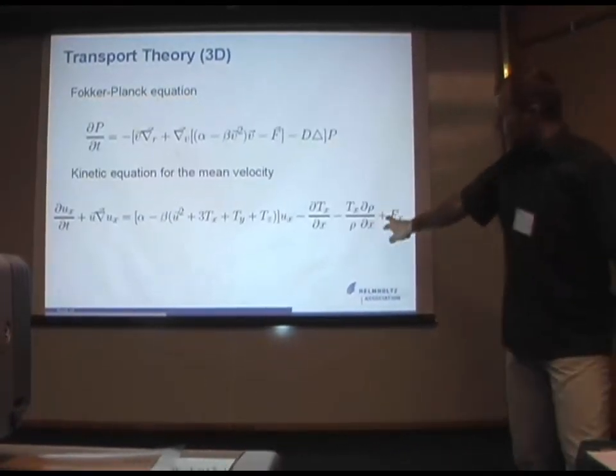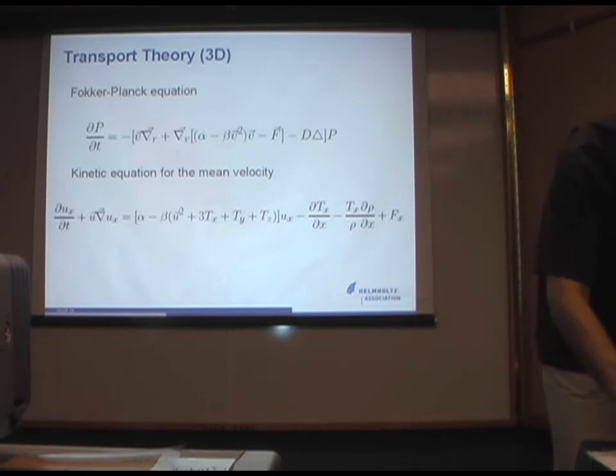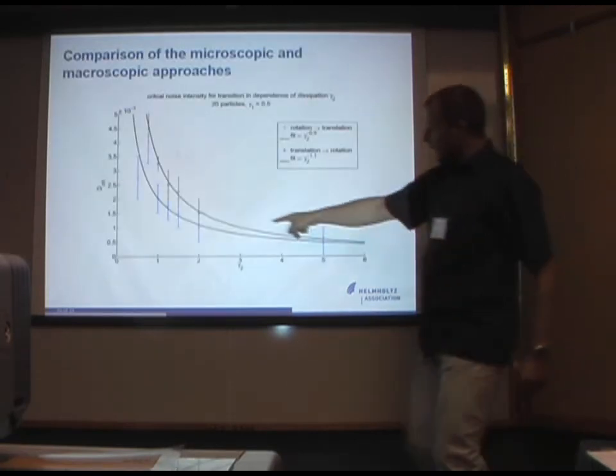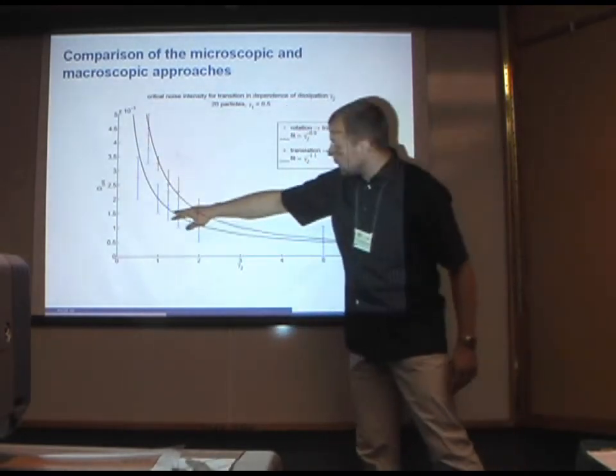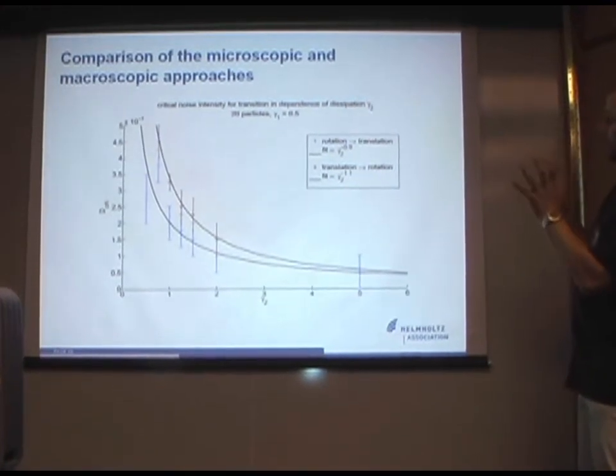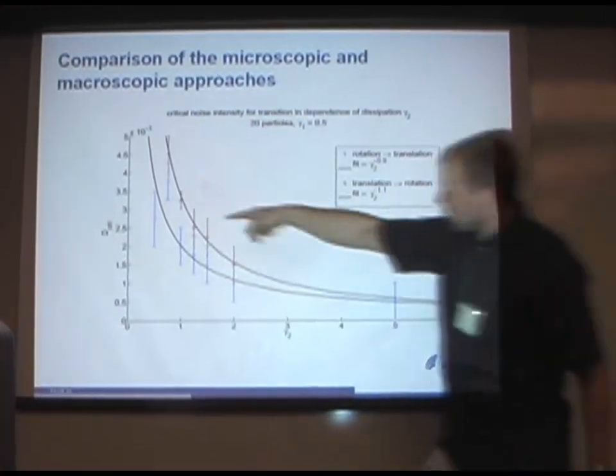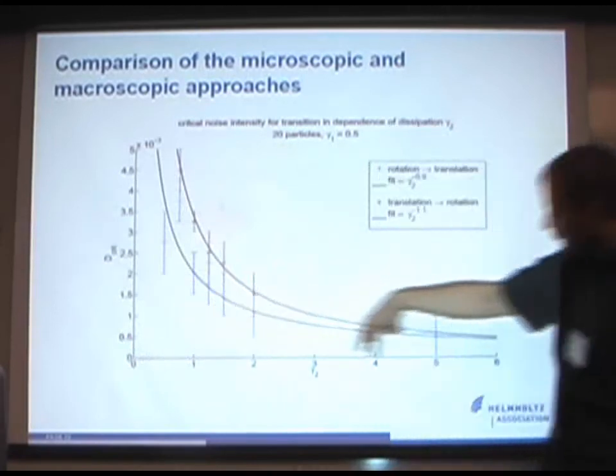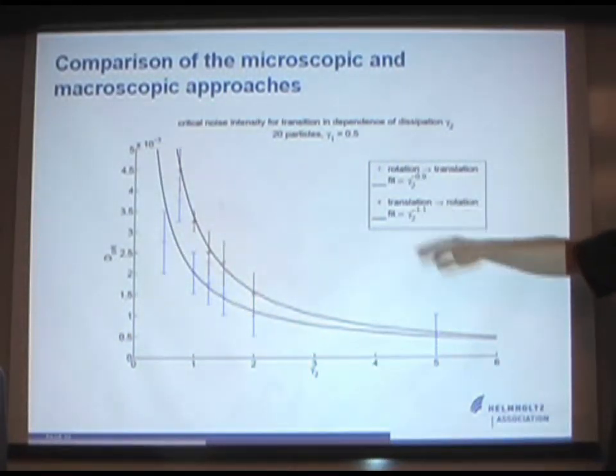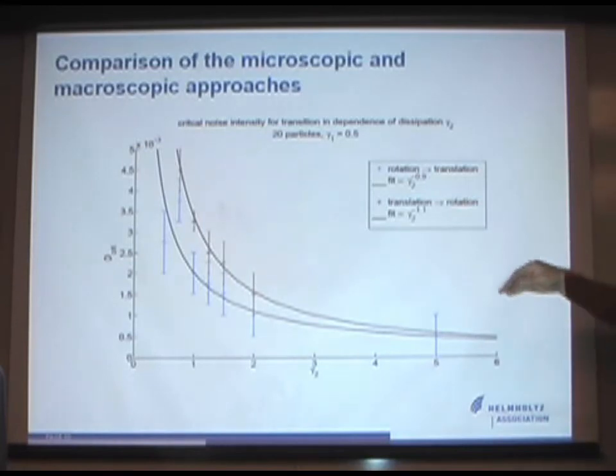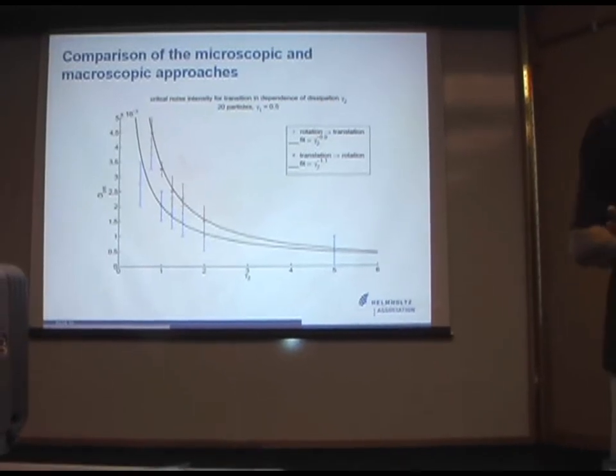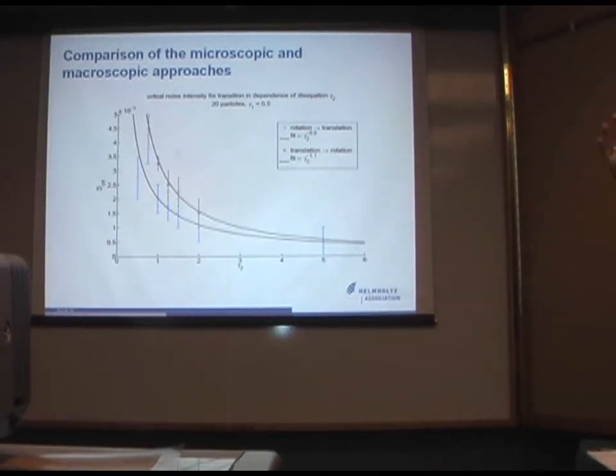And, then I, again, I can write down the transport theory. This is the kinetic equation for the mean velocity, and this is my last picture. The black lines are the transport theory, and the crosses are the critical, the behavior of the critical noise intensity. This is critical noise intensity right here now, depending on the energy, on the dissipation rate. You can fit it over the energy input rate as well. And, you see, transport theory and microscopic simulations fit on top of each other pretty well.